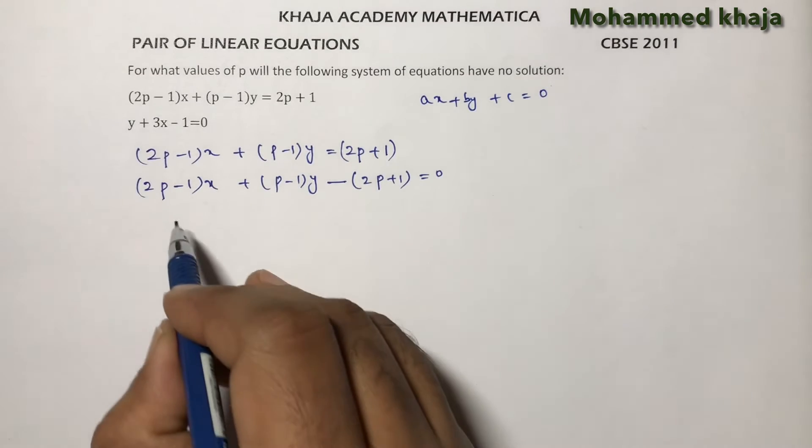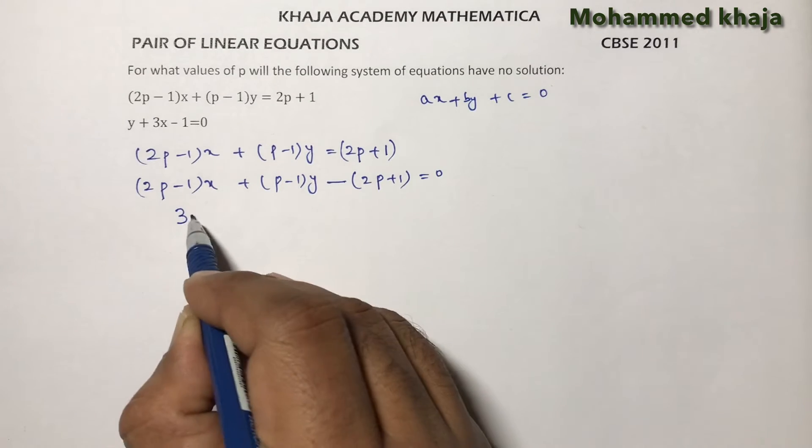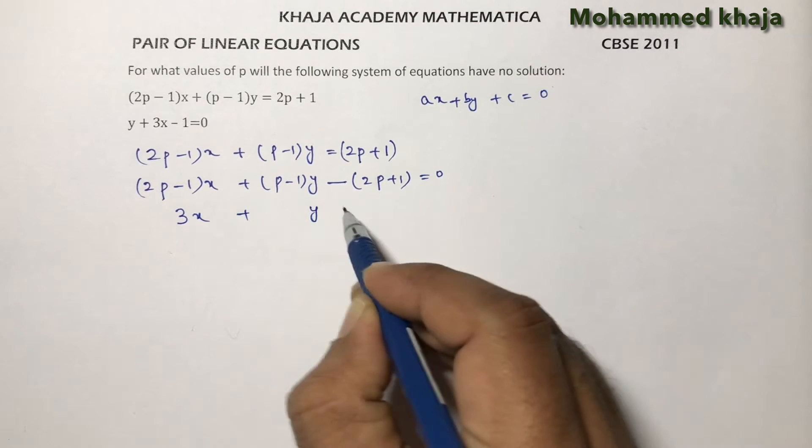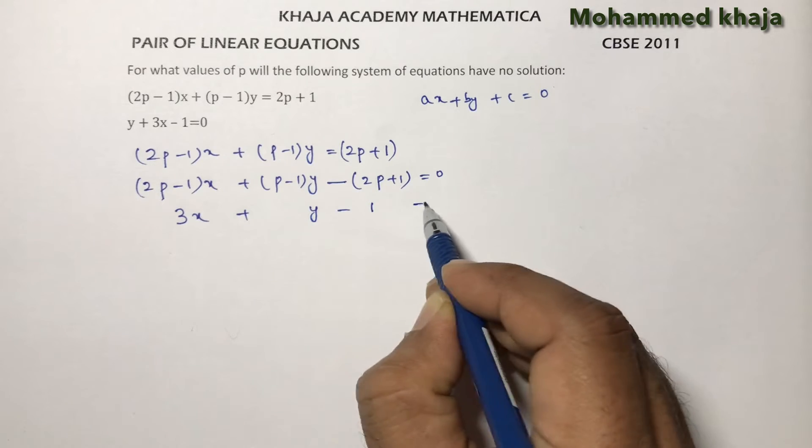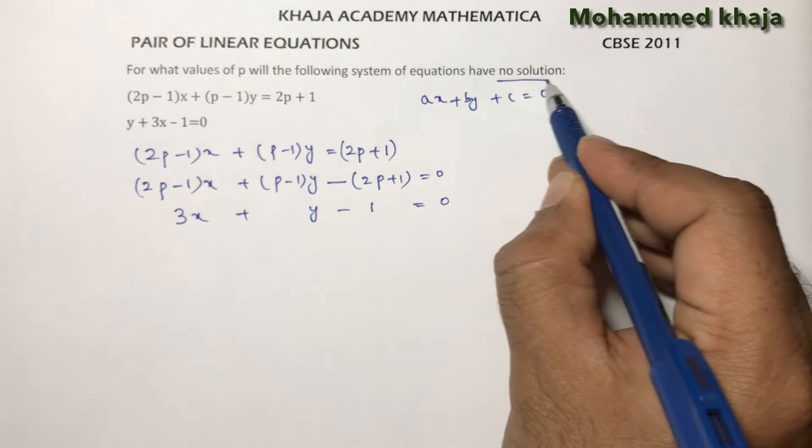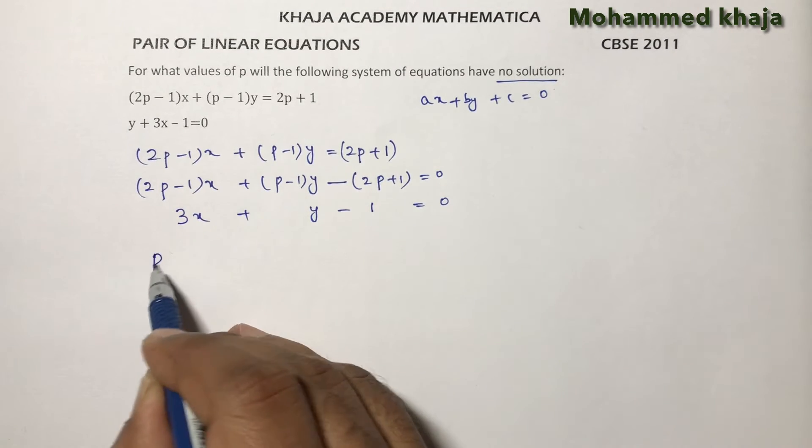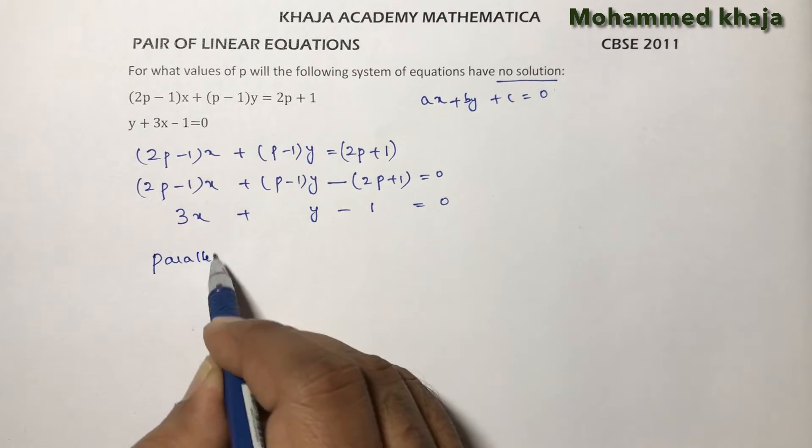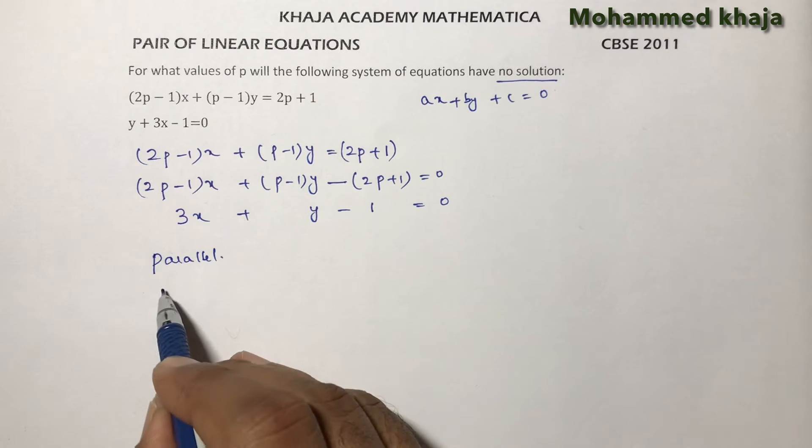So here you will get 3x + y - 1 = 0. These are the two equations. Now, no solution means the lines are parallel. The condition for parallel lines is a₁/a₂